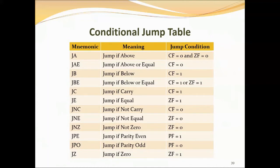Next is JCXZ, which is jump if CX register is zero. JE (jump if equal) and JZ (jump if zero) both apply when ZF equals 1. JG (jump if greater) and JNLE (jump if not less than or equal) apply when ZF equals 0 and SF equals OF. These instructions are usually used after a compare instruction. The terms greater and less are used when considering two signed numbers — greater means more positive. For example, the signed number 00000101 (positive) is greater than 1101001 (negative). No flags are affected.